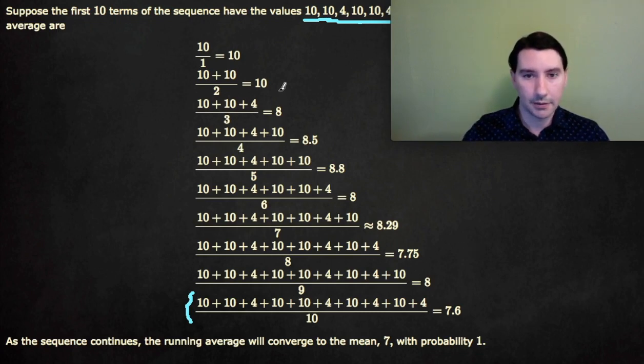And another thing to notice is how much these values change in each sum. The first one doesn't change because we got two 10s, but then it drops down by 2 to 8, then it goes up to 8.5, then to 8.8, and then down quite a bit again to 8, and then up a little bit, and down a little bit.